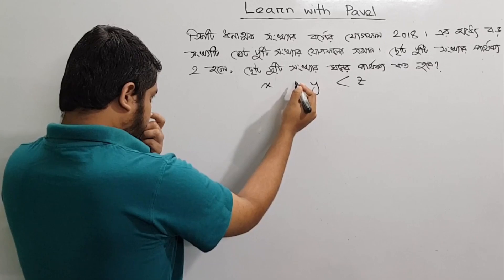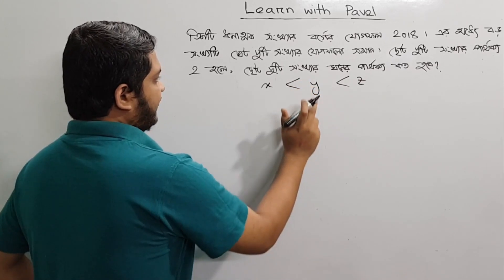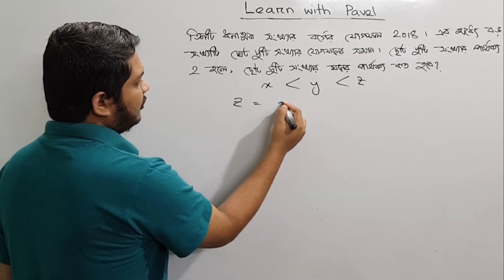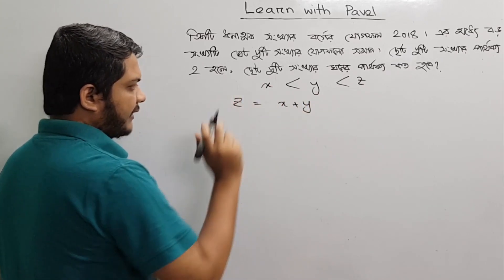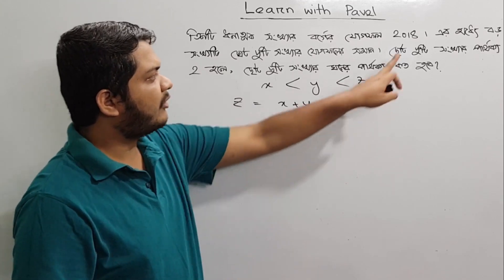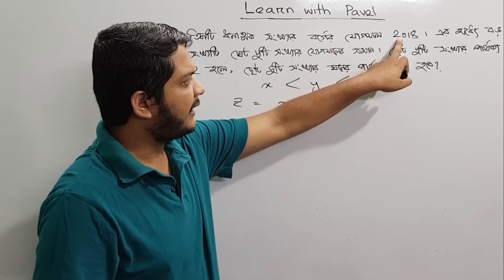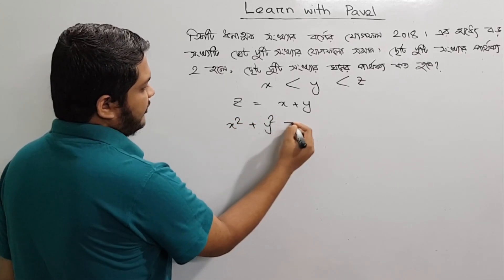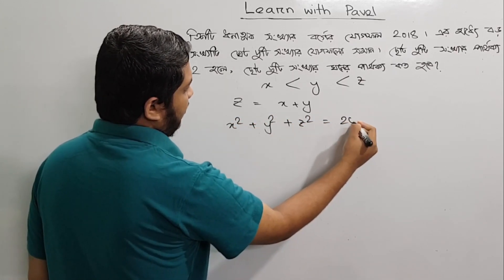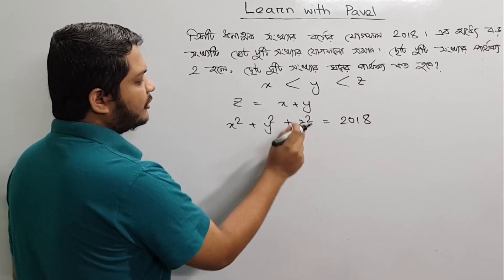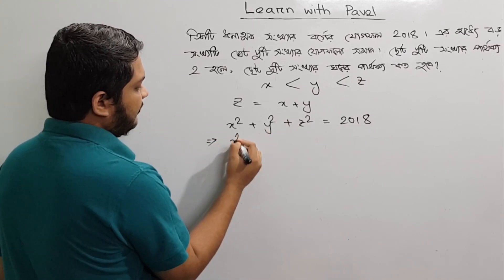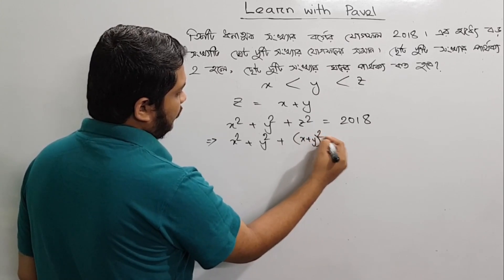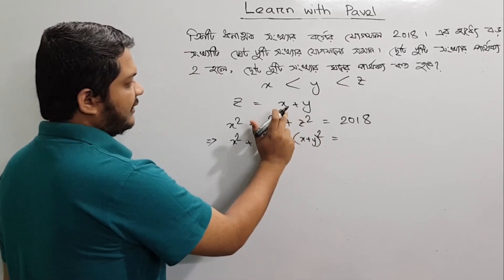The information is z equals x plus y. This is the information, so the first information is x² plus y² plus z². So this is z², and we can expand it as x plus y whole square.